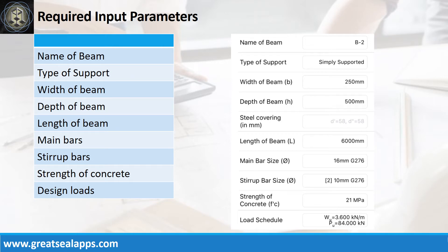Enumerate input parameters required: name of beam BE2, type of support simply supported, width of beam 250 mm, depth of beam 500 mm, length of beam 6000 mm, main bars 16 mm bar at grade 276, stirrup bars 10 mm bar at grade 276, strength of concrete 21 MPa, factored uniform load 3.6 kN per meter, and factored concentrated load 84 kN.